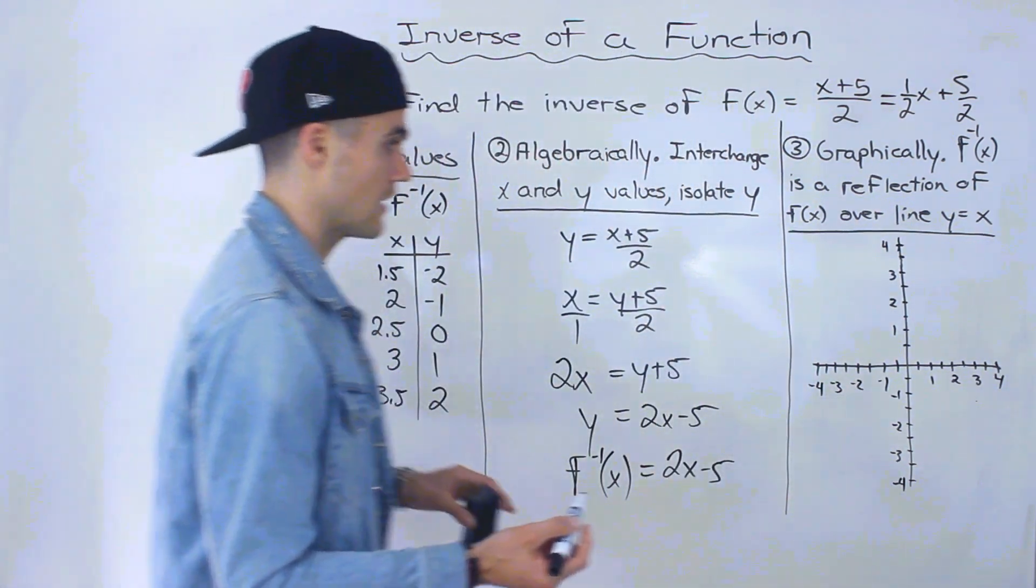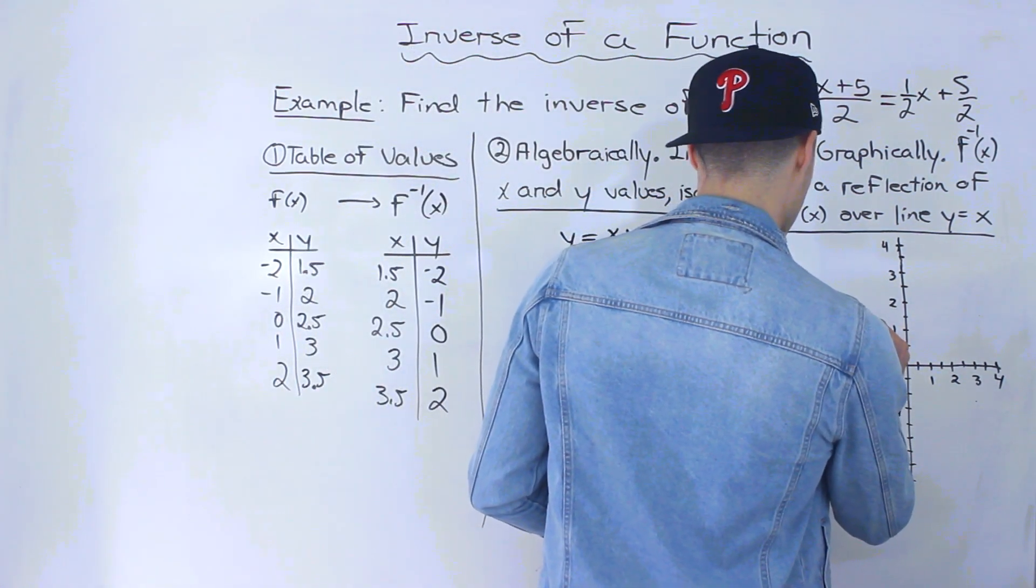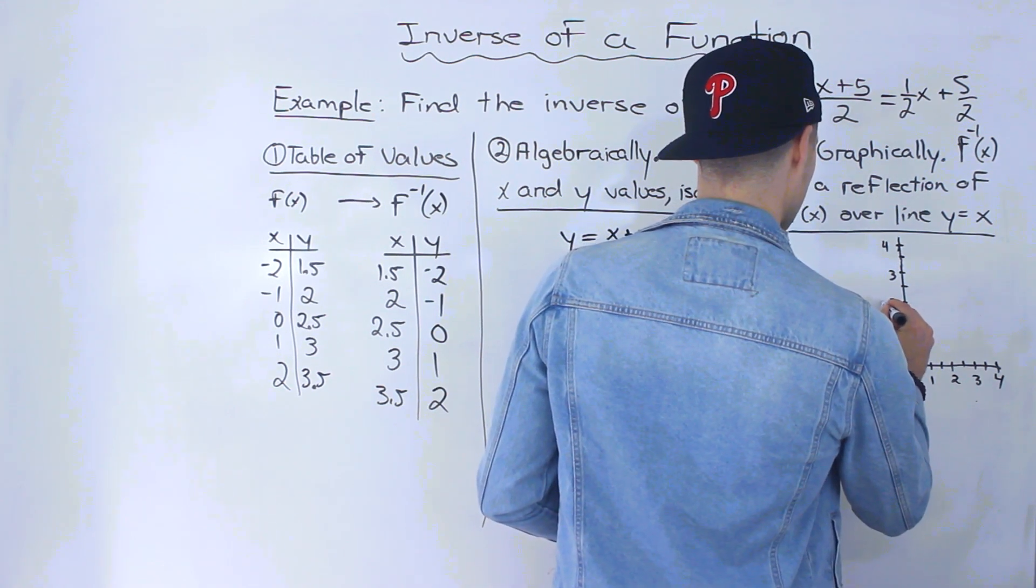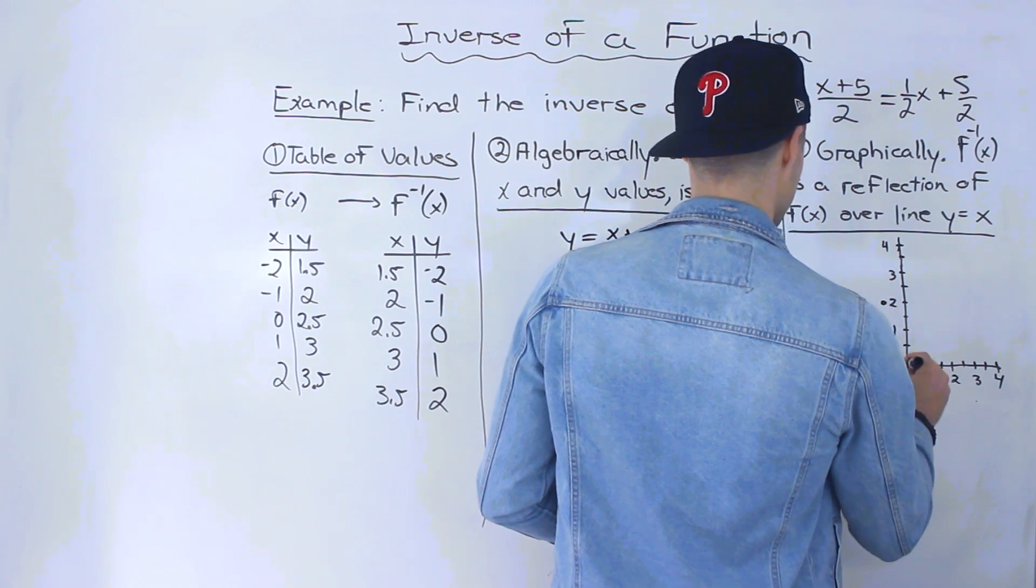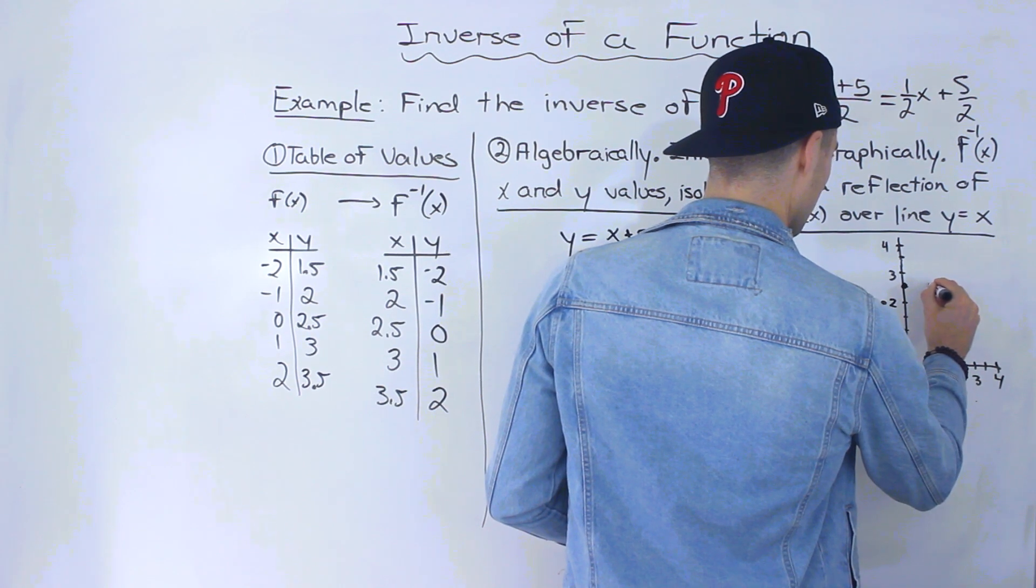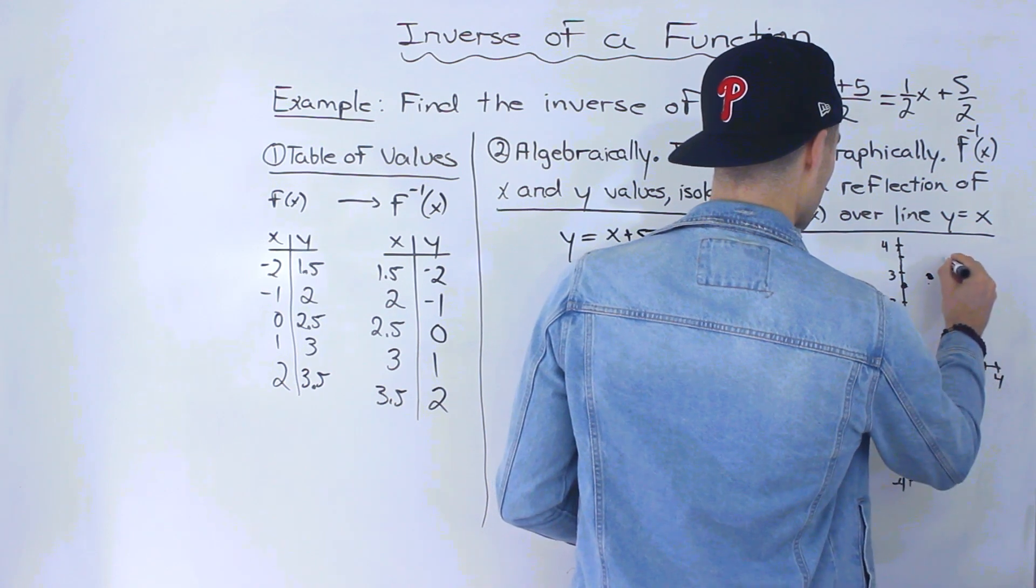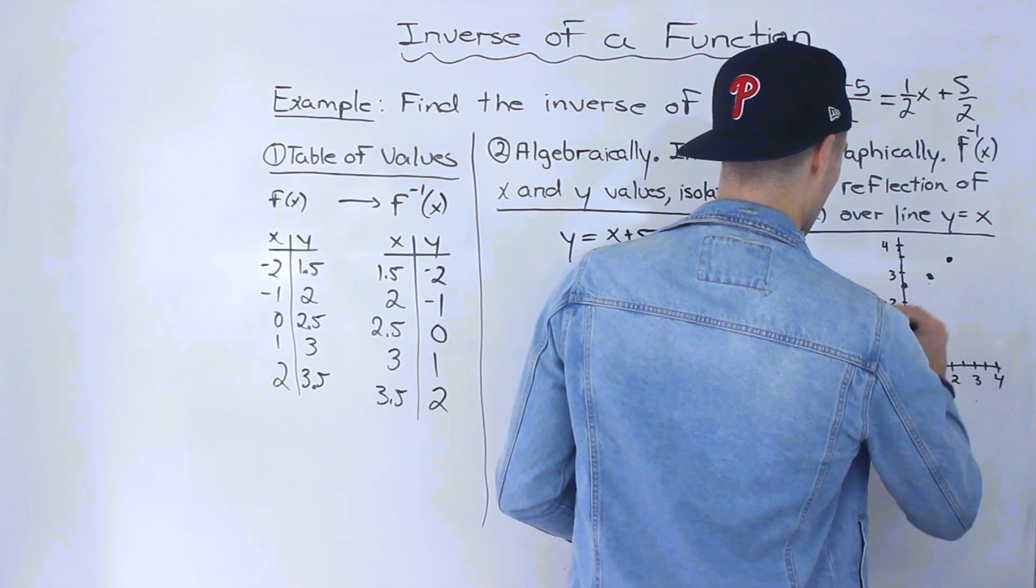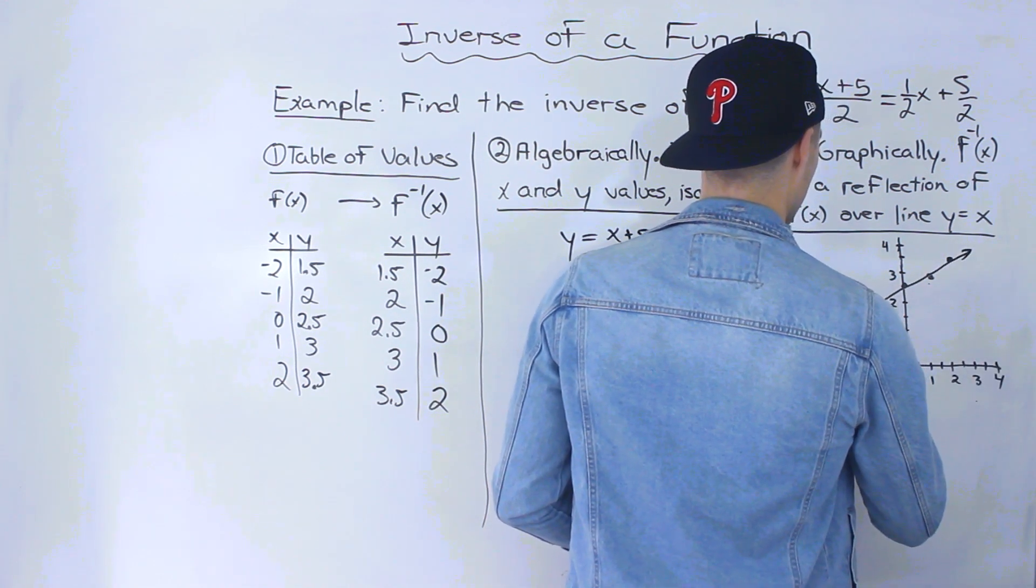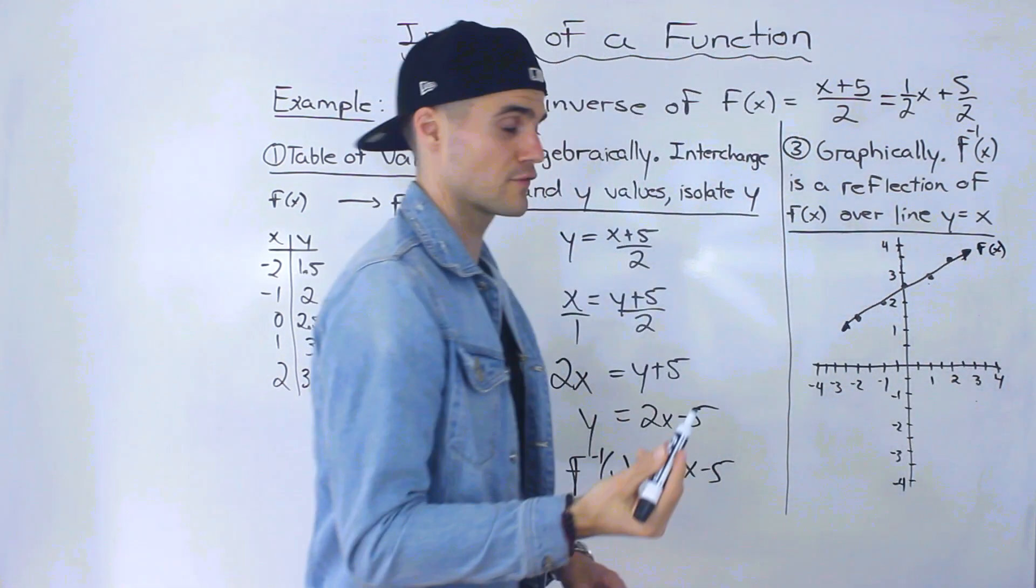So we got negative 2 and 1.5, that would be right here. Then we got negative 1 and 2 up here, 0 and 2.5, 1 and 3, and then 2 and 3.5. So this here ends up being a line. So this here is f of x.